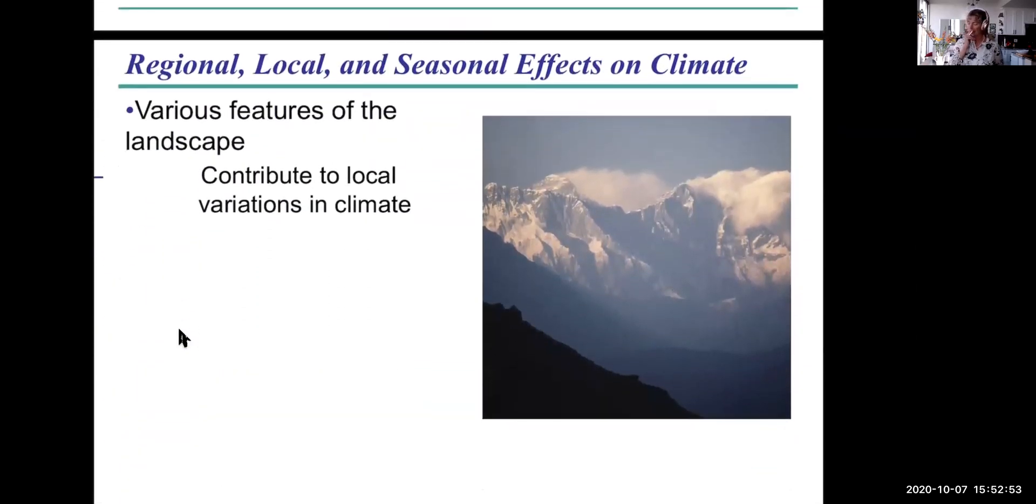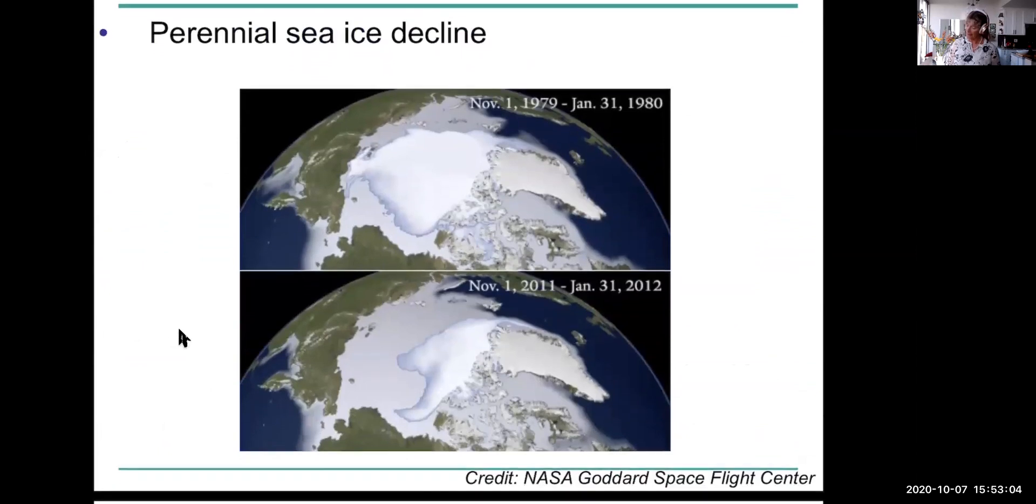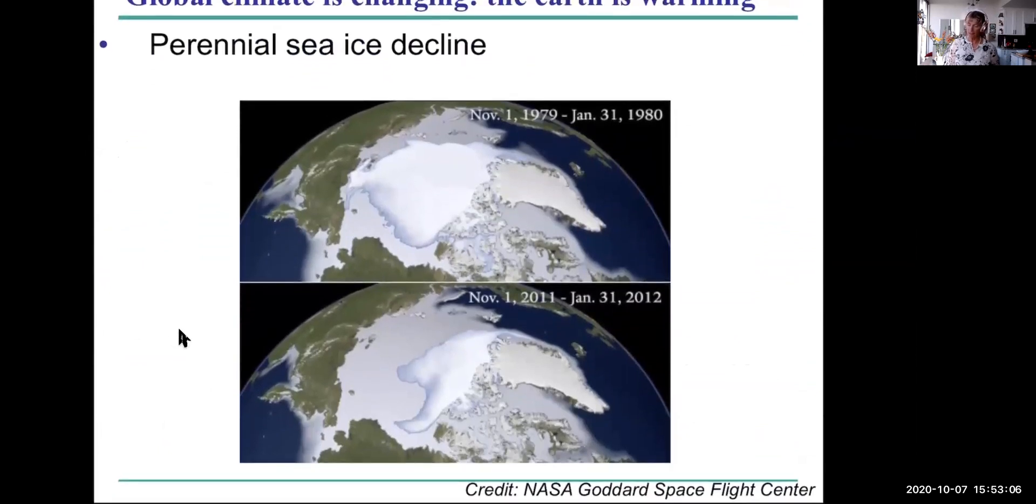So local features of landscape also influence our weather, of course, like mountains do considerably. And globally, there is a trend. Of course, climate is warming. So warming, how much is it warmed? About one degree, I think. One degree Celsius. I don't know, it depends who you talk to, but it is definitely warming more than you would expect background warming to be.